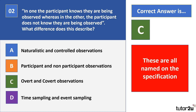All of these options — A, B, C, and D — are named on the specification within the context of observations. So you will have to know what each of them are, as well as being able to describe how they might be used and also the advantages and disadvantages of each of them.